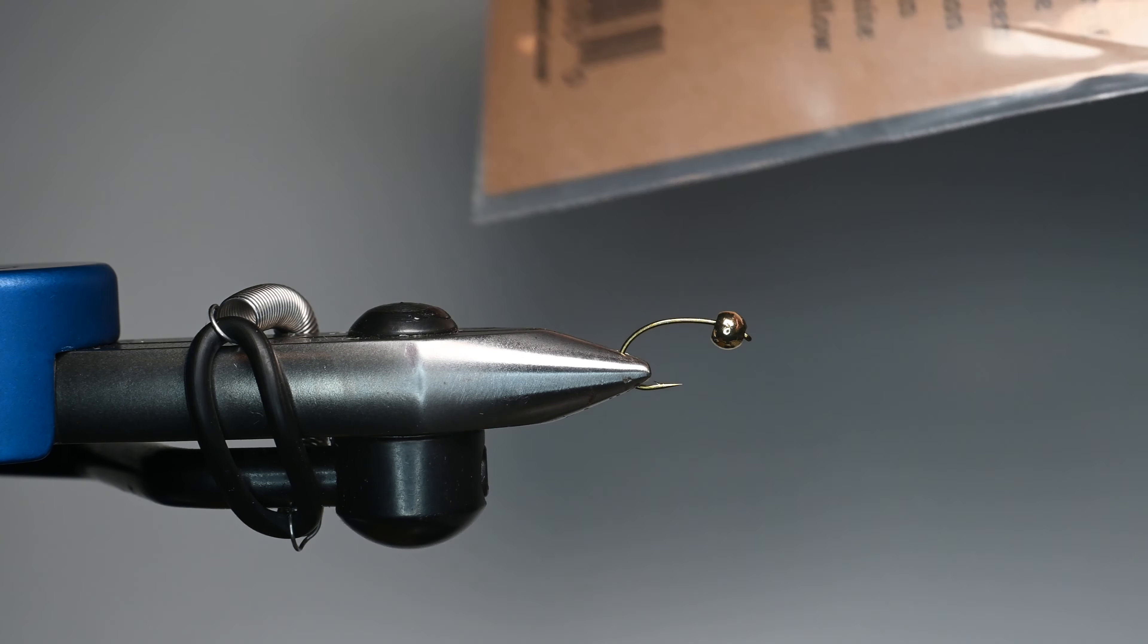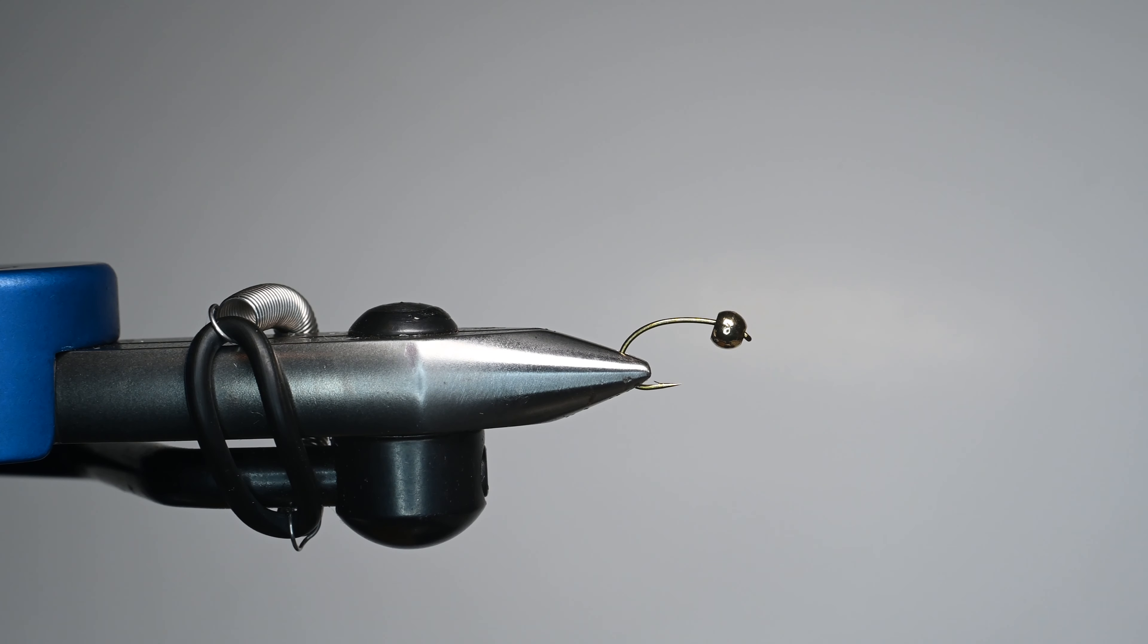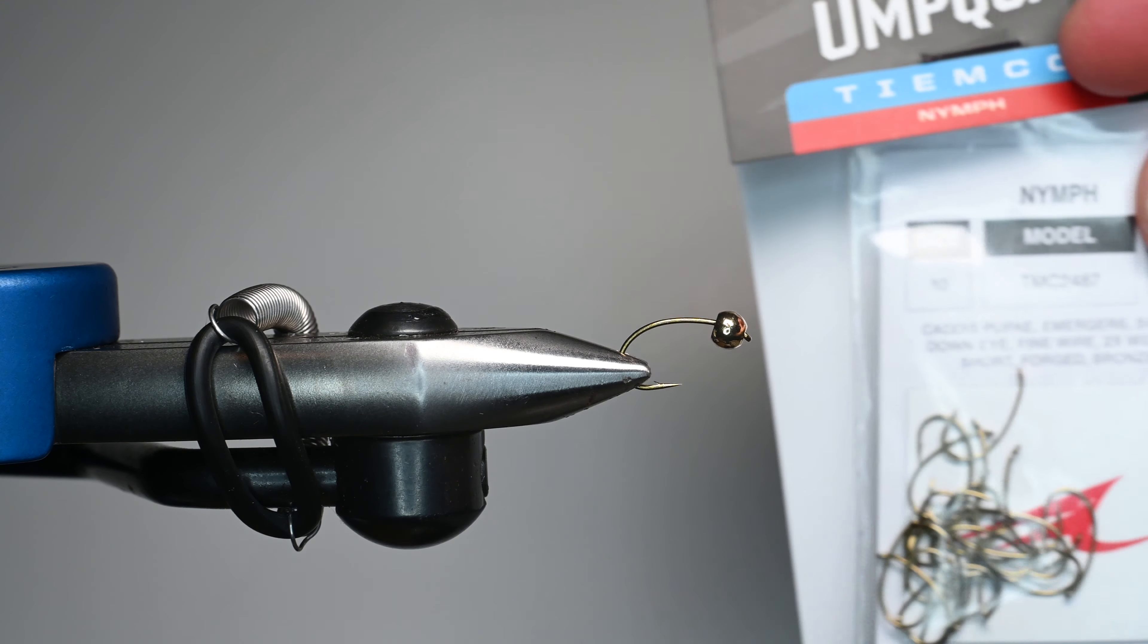This is a mop material. It comes in a bunch of different colors. My favorites are actually included in this pack. I like tan, cream, and gray. Those seem to have worked well. Also chartreuse.